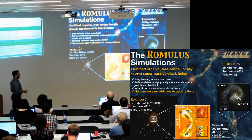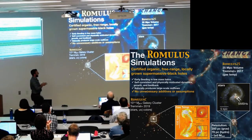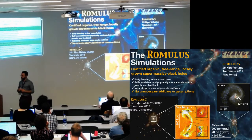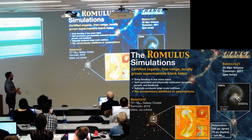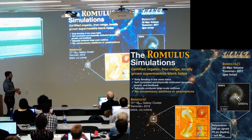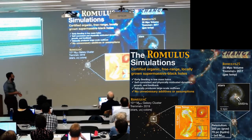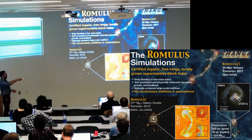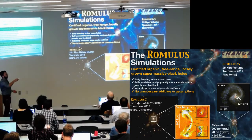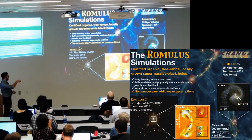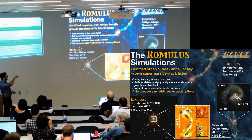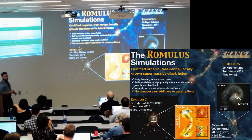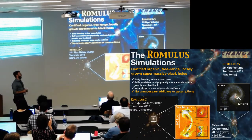Tom already gave a nice introduction to the Romulus simulations. They're a suite of large-scale, high-resolution cosmological simulations with 250 parsec spatial resolution and 10^5 solar mass mass resolution. We have a uniform volume simulation going from isolated dwarf galaxies all the way to galaxy groups, as well as a galaxy cluster zoom-in simulation, Romulus C, of a 10^14 solar mass cluster.